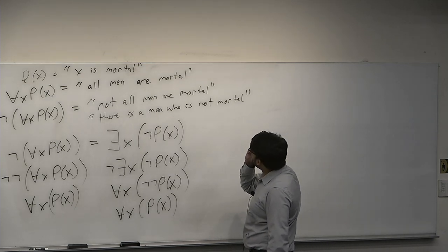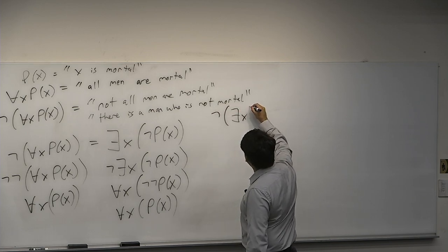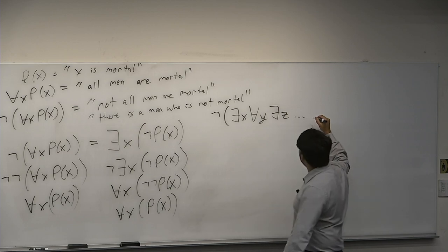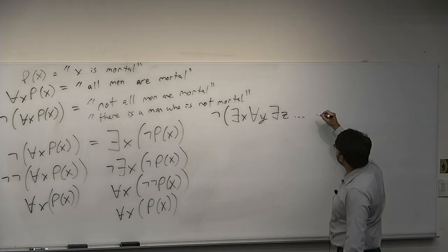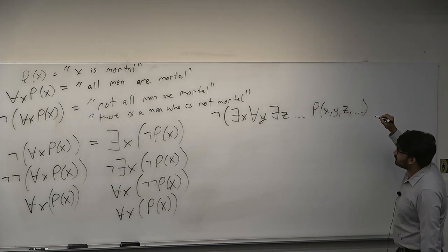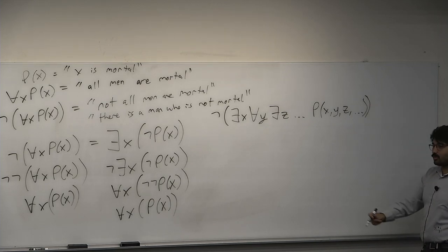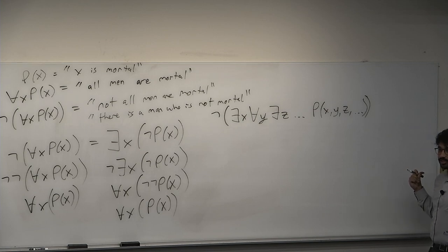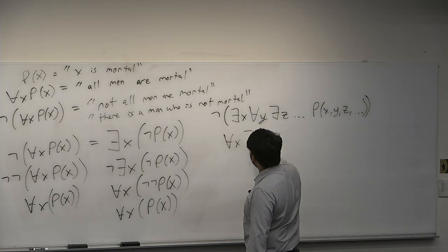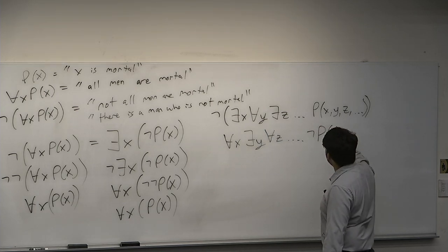What if we have the negation of a string of quantifiers — say 'there exists x, for all y, there exists z' with some predicate P(x, y, z)? Even with 25 million quantifiers, what we do is flip every single quantifier and then negate the predicate. This becomes: 'for all x, there exists y, for all z, not P(x, y, z).'